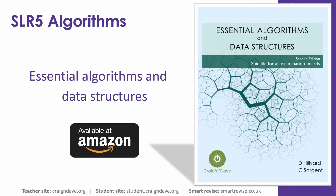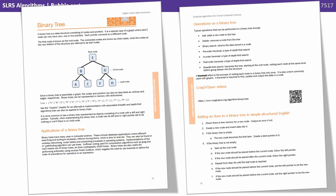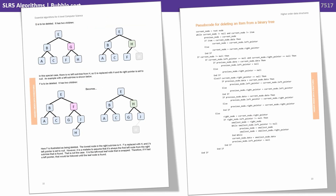Data structures and algorithms are one of the hardest areas of the course, and we've therefore written a dedicated book available to purchase on Amazon. The book covers all the data structures and algorithms you need to be aware of for the exam, with each one having its own dedicated chapter. Each chapter overviews the data structure or algorithm, gives you applications, operations, links to our videos online, and goes over the algorithm in simple structured English, a visualization, pseudocode, and is fully coded in Python, C# and Visual Basic.